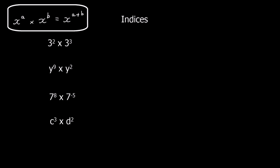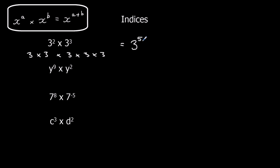So here's the first rule: when we multiply we add the powers. Let me explain why. We've got 3 squared, which means 3 times 3, and it's multiplied by 3 cubed, which means 3 times 3 times 3. So what we've actually got is five 3s multiplied together. Another way of writing that is 3 to the power of 5. So 2 plus 3 made 5.